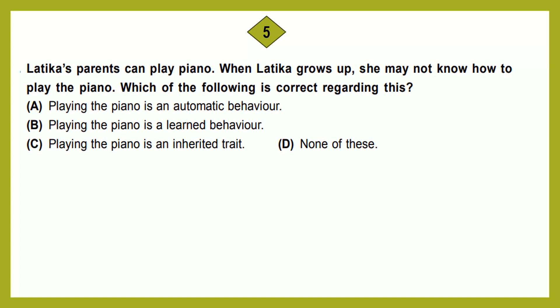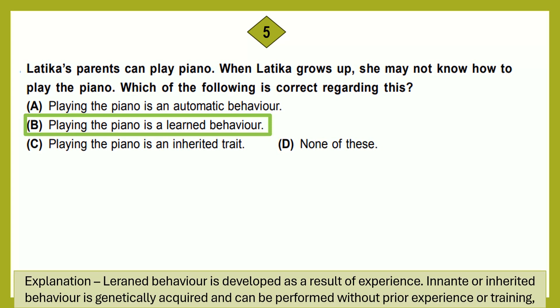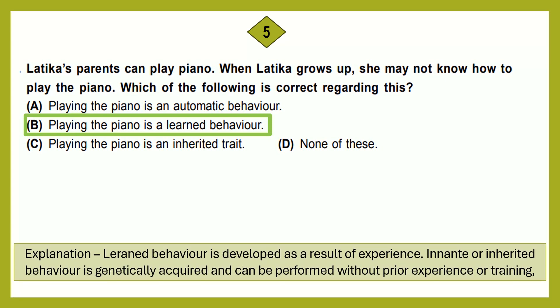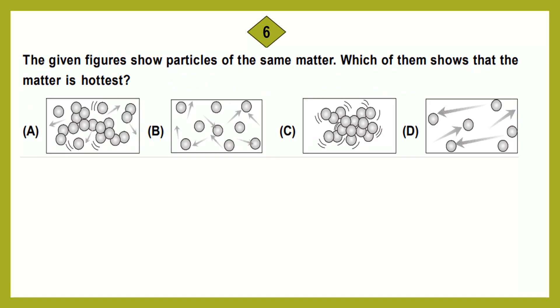Question number 5: Ludica's parents can play piano. When Ludica grows up, she may not know how to play the piano. Which of the following is correct regarding this? Option A: playing the piano is an automatic behavior. Option B: playing the piano is a learned behavior. Option C: playing the piano is an inherited trait. Option D: none of these. The correct answer is option B. Learned behavior is developed as a result of experience. Innate or inherited behavior is genetically acquired and can be performed without prior experience or training.